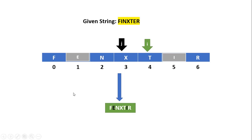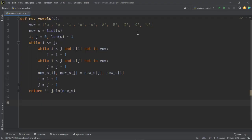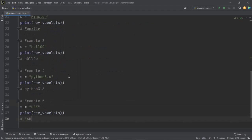As you can see, the output is as shown on screen. The only vowels in the string 'finster' were I and E, which were swapped. We convert the list back into a string using the join method and return it. This is how the algorithm works. Now let's execute a few test cases on our code to verify it works for all given cases.